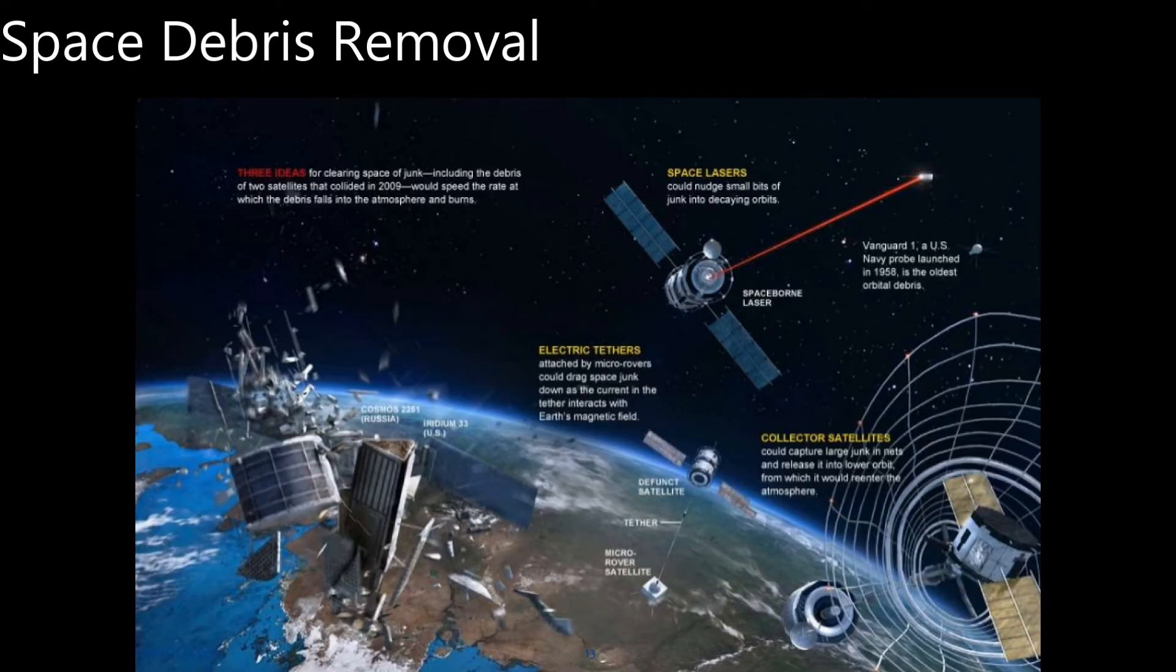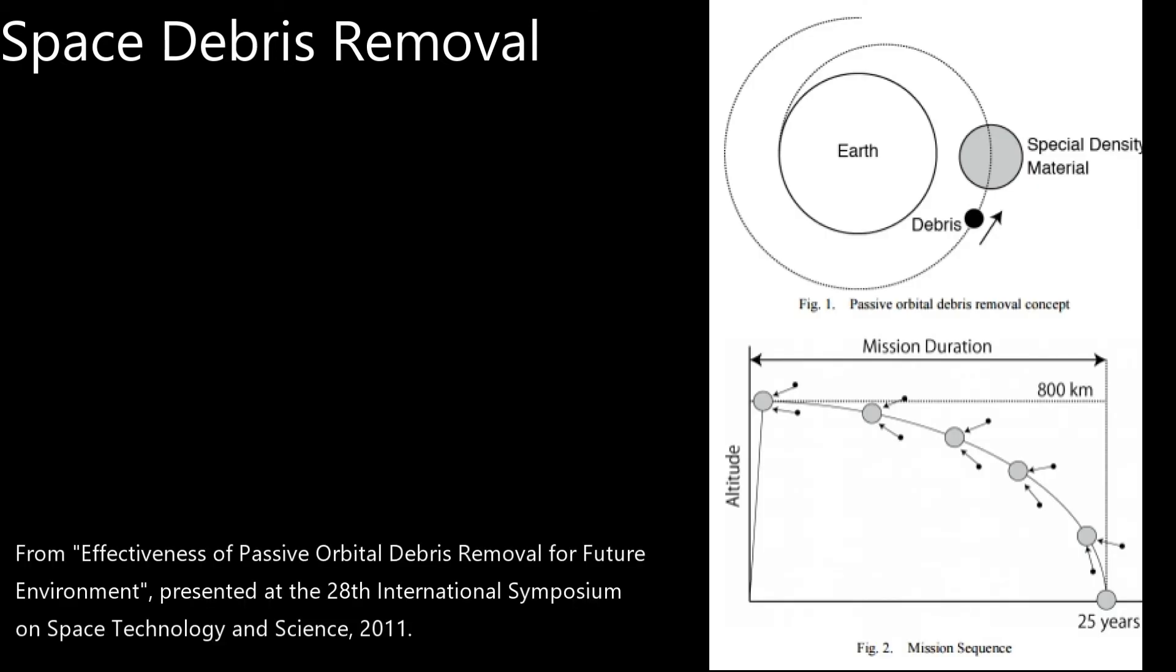There are different methods being studied for removing space debris, but they can generally be broken down to active and passive methods. Passive debris removal is based on the idea of non-selective removal of objects. A removal spacecraft, sometimes called a sweeper or janitor satellite,